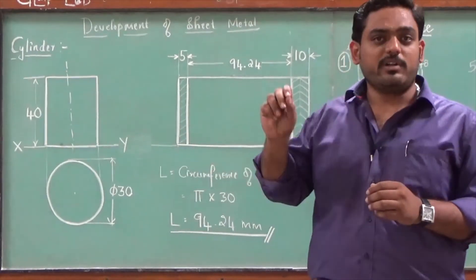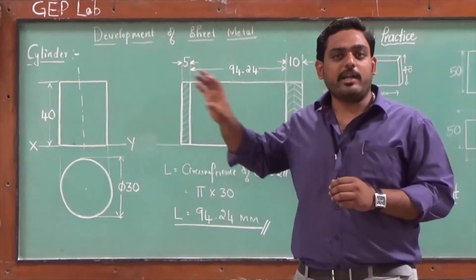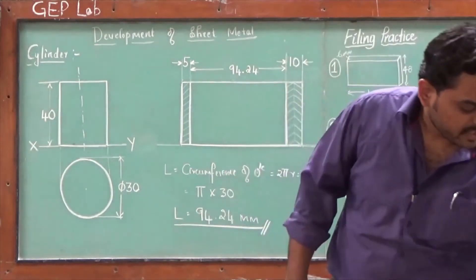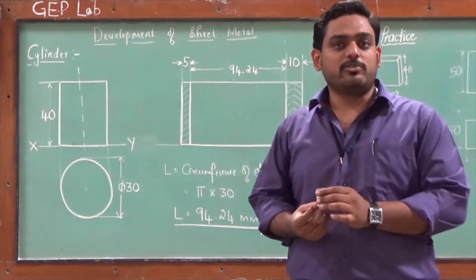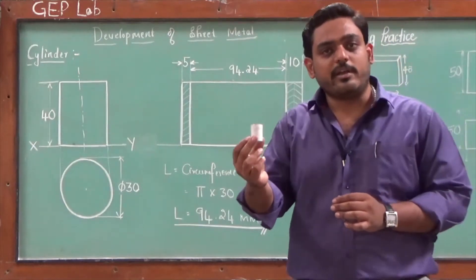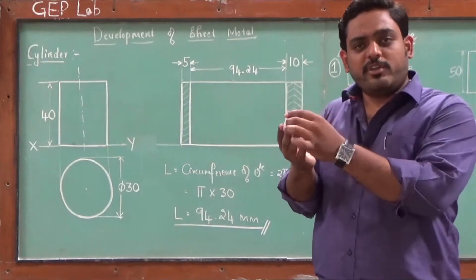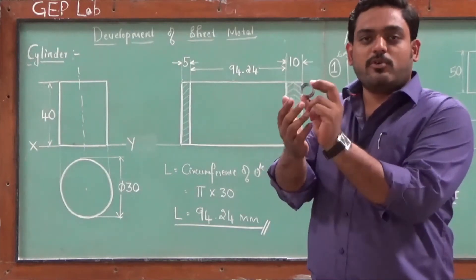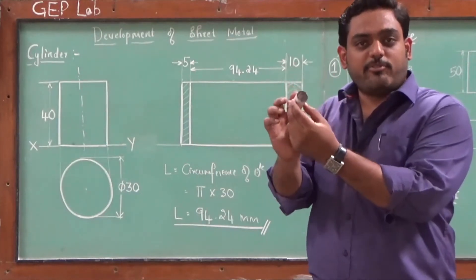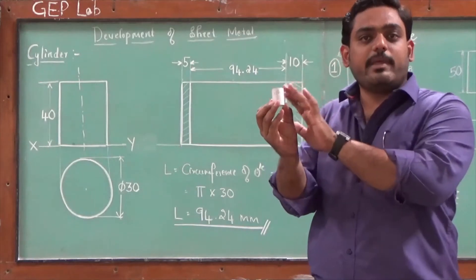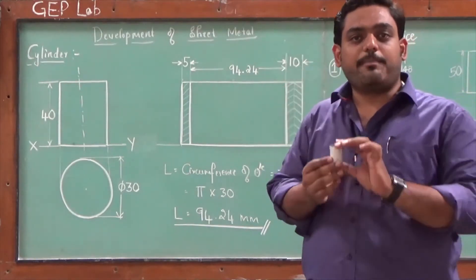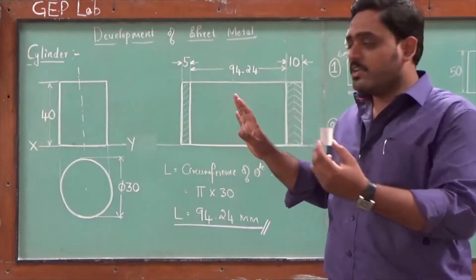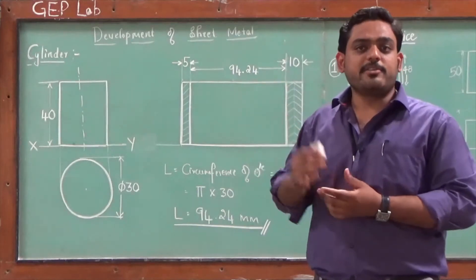Today I will take a simple example of a cylinder and explain how to do a development on sheet metal. We will consider a small cylinder of certain dimensions, and we assume this to be a hollow cylinder, neglecting the top and bottom surfaces. Therefore, it is a complete through-hole form — no top surface, no bottom surface — only the lateral surface will be developed.